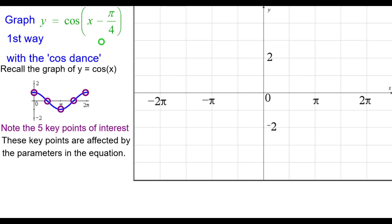These key points and all points on the cosine are affected by the parameters in the equation. In this case, there is just one parameter, minus pi over 4 subtracted from x inside the argument of the function. This shifts each point horizontally to the right, pi over 4 units.